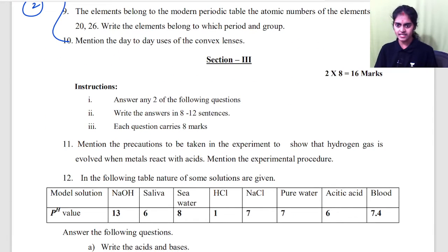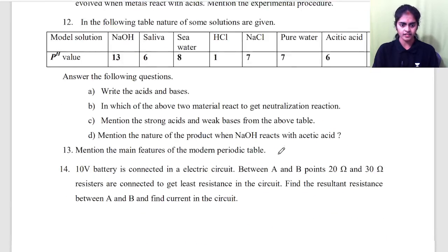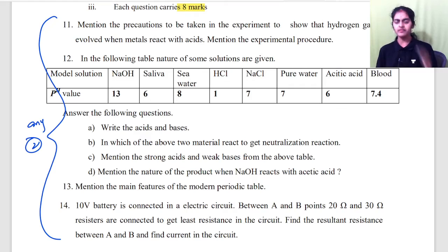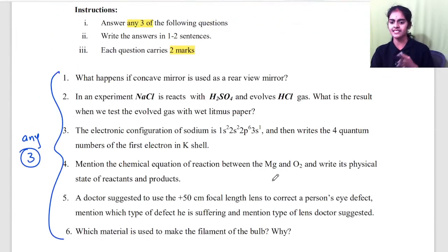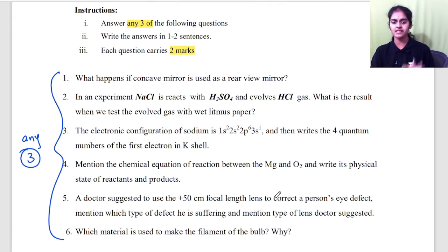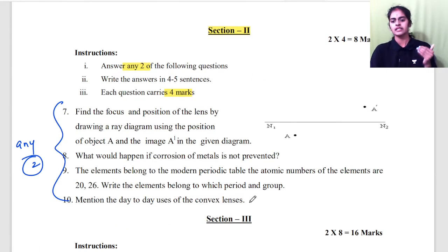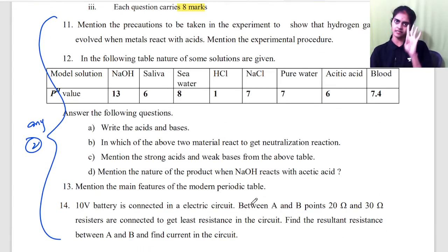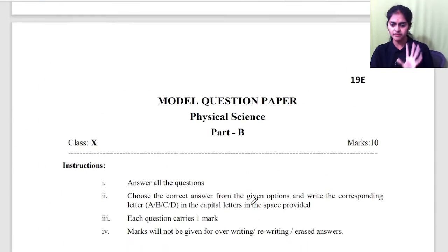Then section 3, if you see, section 3 has 8 mark question. You should answer any 2. So again, 1, 2, 3, 4 questions are given to you. Out of these 4, you can answer any 2. So if you see, in every section, you have 50-50 choice. First section, they are asking you to answer any 3 questions. But they are giving you 6 questions, out of which you should answer only 3. Second bit, they are giving you 4 questions, you should answer only 2. Third bit, third section, they are giving 4. Again, you should answer only 2. So, 50-50 choice.